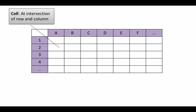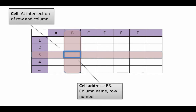We already know that at the intersection of a row and column is a cell. So you've got row 3 and column B, and at their intersection is a cell. An important characteristic of a cell is the cell's address, because we will be referring to cells when creating spreadsheets. A cell address is simply composed of the cell's column name combined with the cell's row number. So for this particular cell highlighted here, it's in column B and row 3, and therefore its address is B3. That's all there is to a cell address.